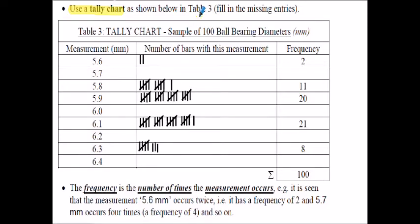So we're going to use a tally chart to try and make some semblance of order of the information on the previous slide. What we notice when we scan the hundred ball bearing dimensions is that certain numbers crop up quite often. These measurements are 5.6, 5.7, 5.8, 5.9, et cetera, up to 6.4. They were common numbers - they occurred more than once. So I'm going to use a tally chart to collate the information.